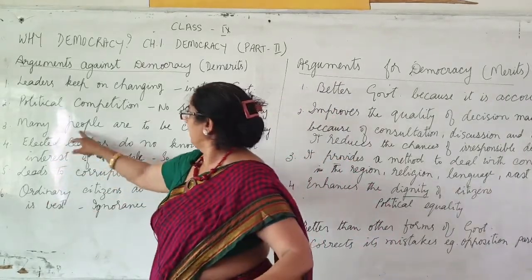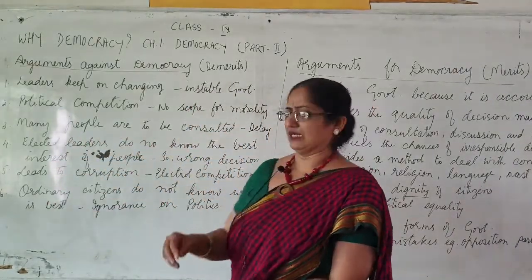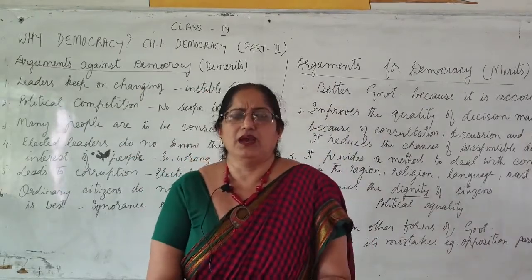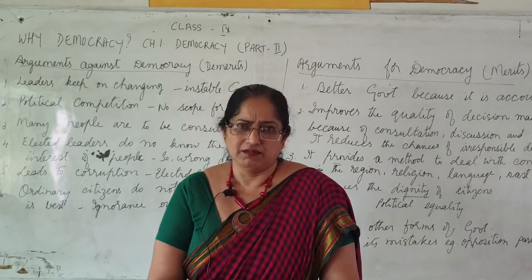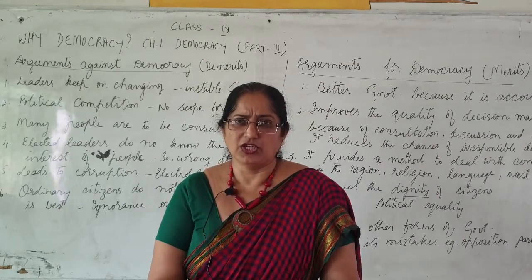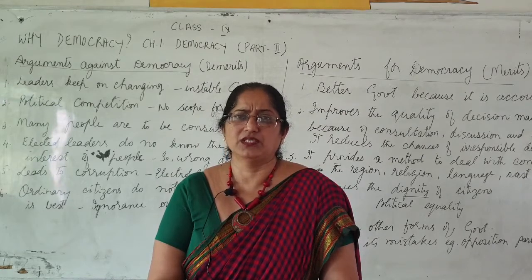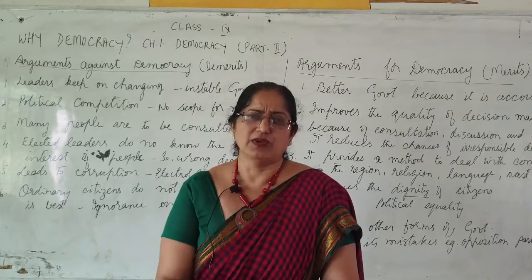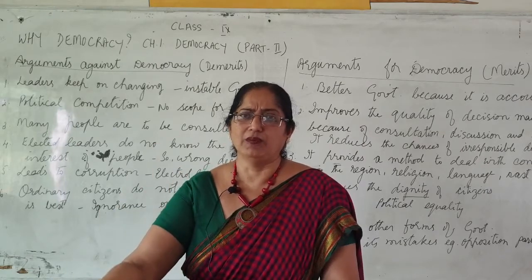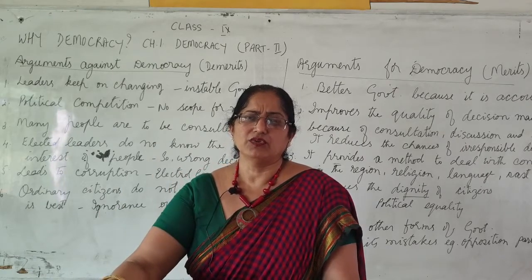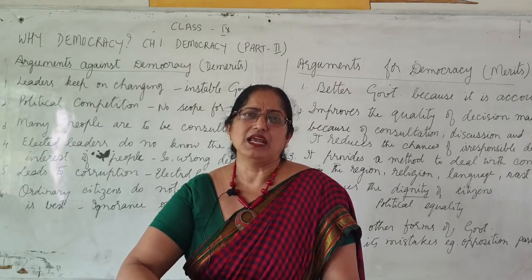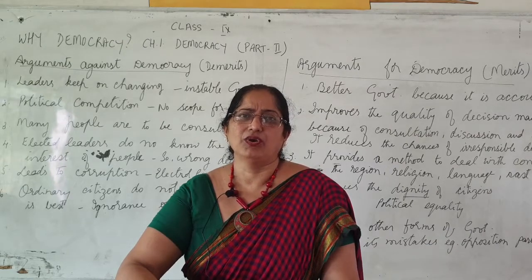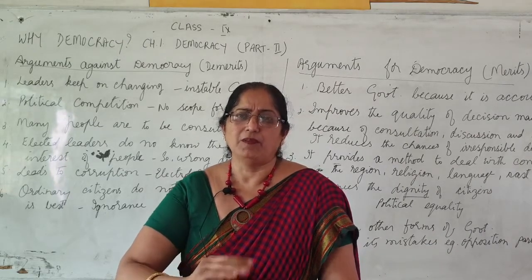The third demerit: many people are to be consulted. In a democratic government, party members and different coalition parties all have to be consulted. Everyone has to be consulted, including local people. Which means decisions cannot be made very fast — they are delayed because so many people are consulted.